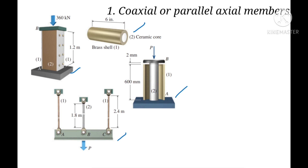With this kind of problem, the deformation of each axial member must be the same, unless there is a gap or clearance in the connection. So we have delta 1 equal to delta 2. If there is a gap, then the deformation of one member equals the deformation of the other member plus the length of the gap: delta 1 equal to delta 2 plus the gap.